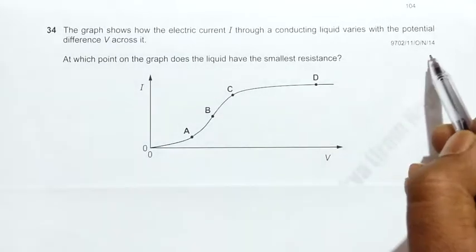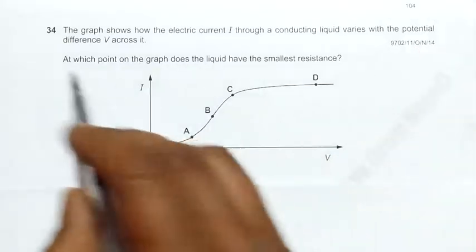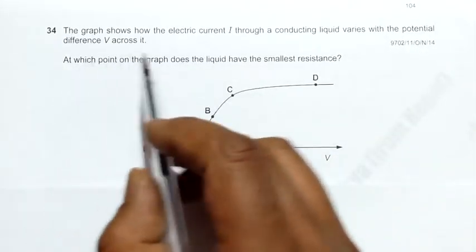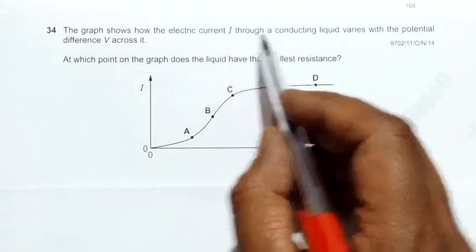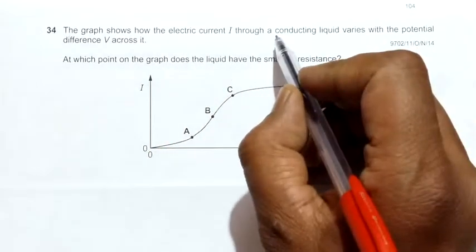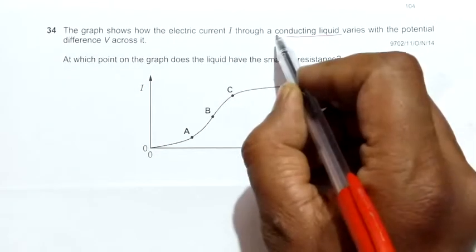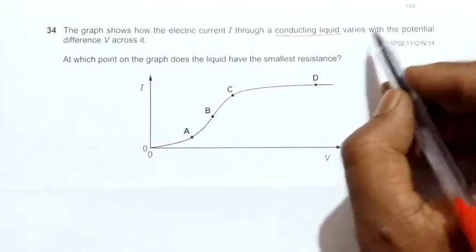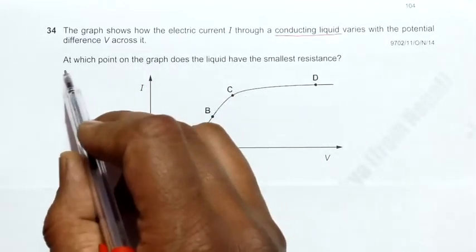This is question 34 from the 2014 October November paper 1. The graph shows how the electric current I through a conducting liquid—not a metallic conductor, but a conducting liquid like mercury—varies with the potential difference V across it.